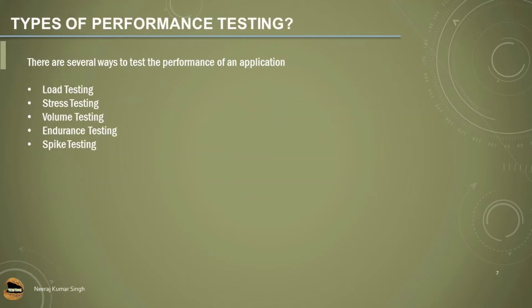Next are the types of performance testing. Performance testing is not just a single level — it is a collection of multiple levels. It comprises many parameters to be measured and recorded for analyzing performance issues, covered by five major types. We can conduct performance testing in several ways: load testing, stress testing, volume testing, endurance testing, and spike testing.